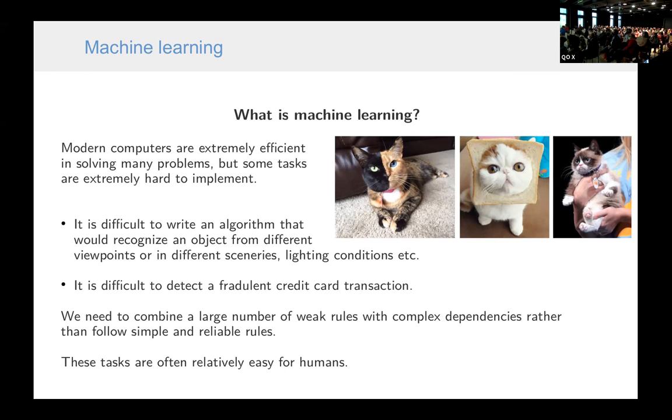But there are some tasks that are very hard to implement using algorithms. In particular, it is very difficult to write an algorithm that would recognize an object in different scenarios, from different viewpoints. This kind of tasks are characterized by the property that you need to combine a very large number of weak rules with complex dependencies. For example, you have to recognize eyes of the cat, nose, the position and so on. And it is very hard to write an algorithm for a human that would do this step by step.